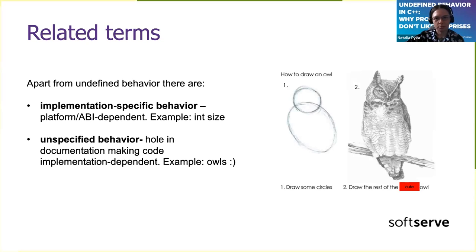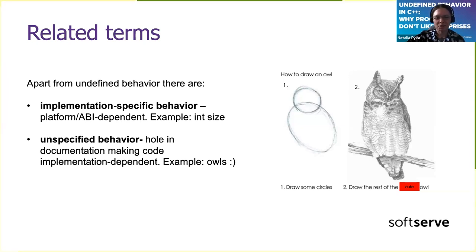To be strict, there are three different terms. Undefined behavior; implementation-specific behavior, where what happens depends on details of a binary interface or particular platform — an example is the size of an integer, or accessing a non-active union member. Luckily, in C++17, accessing non-active union members is not permitted anyway.